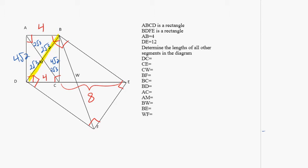If this length is 4 root 3, then this length has to be 4 root 3 because the opposite sides of a rectangle are congruent.